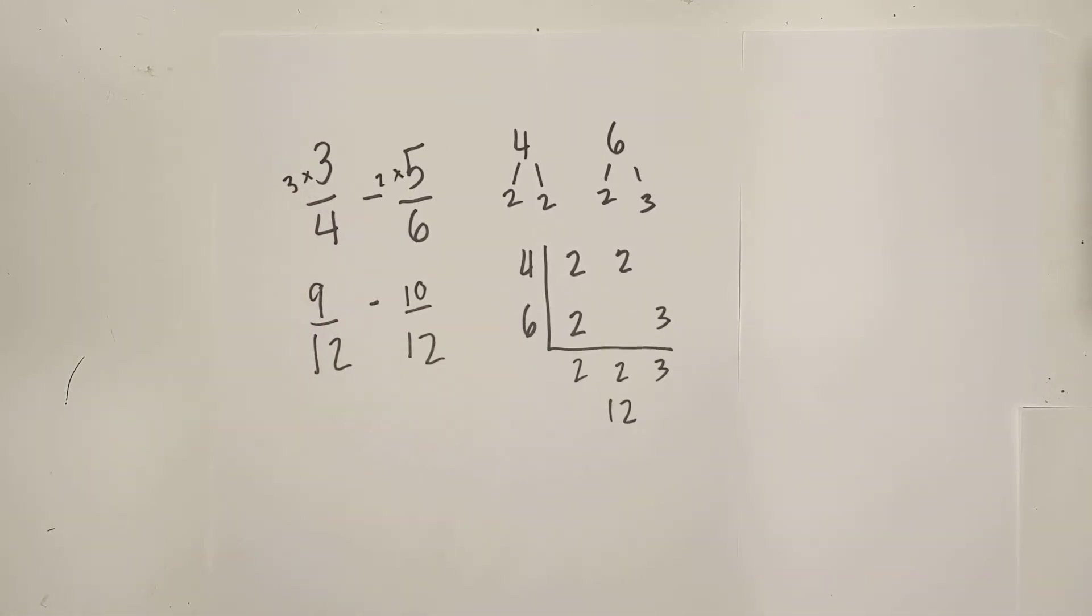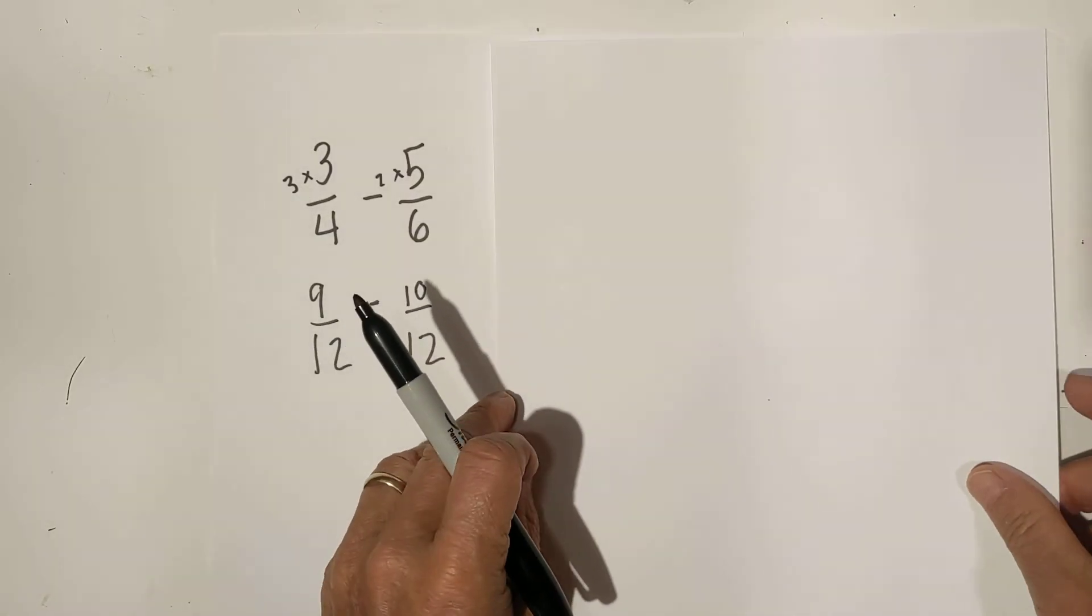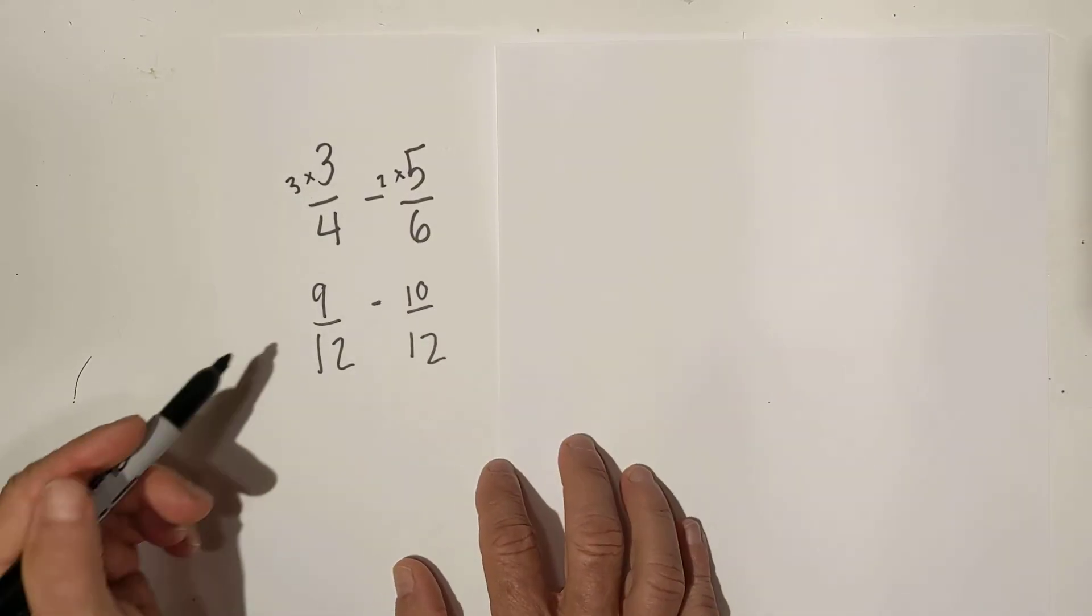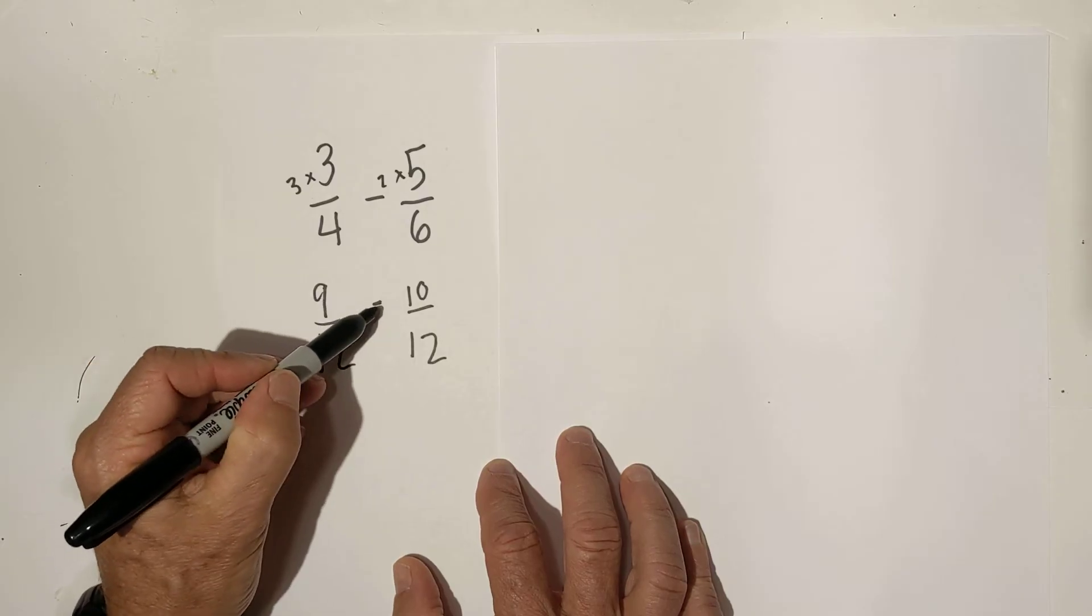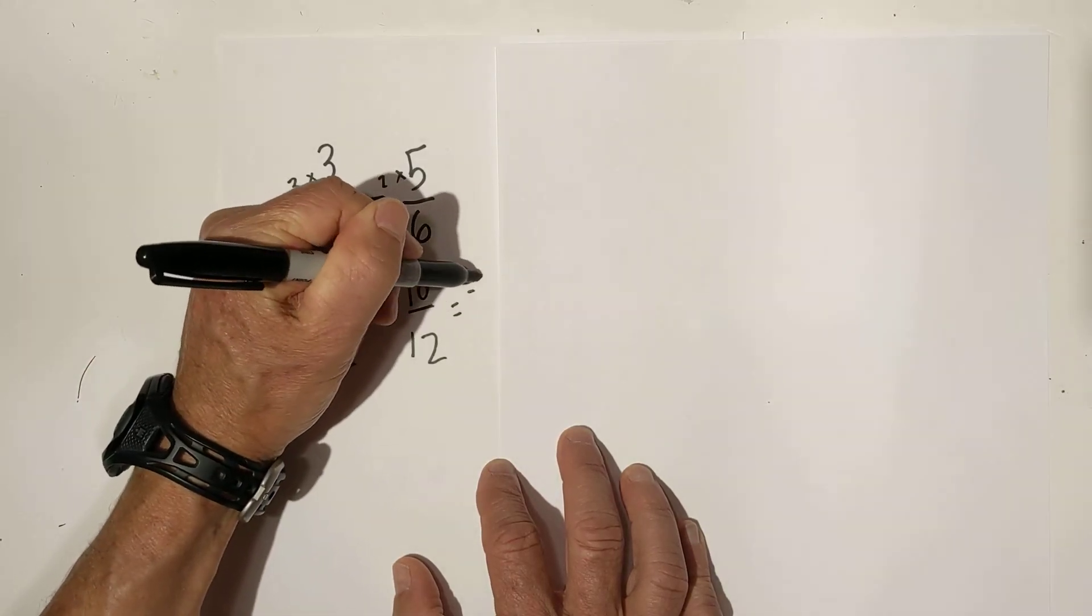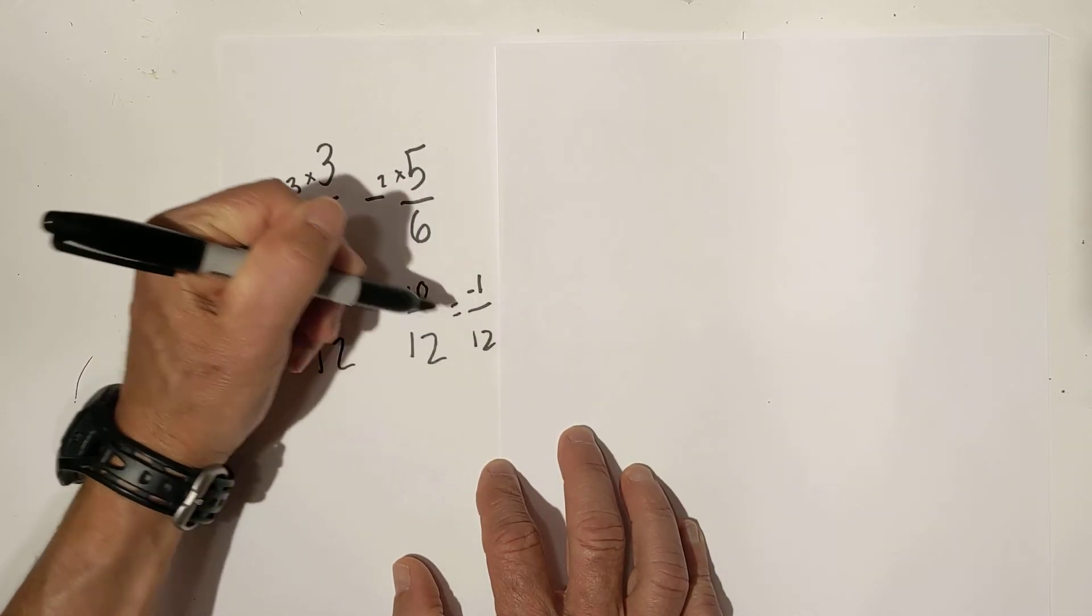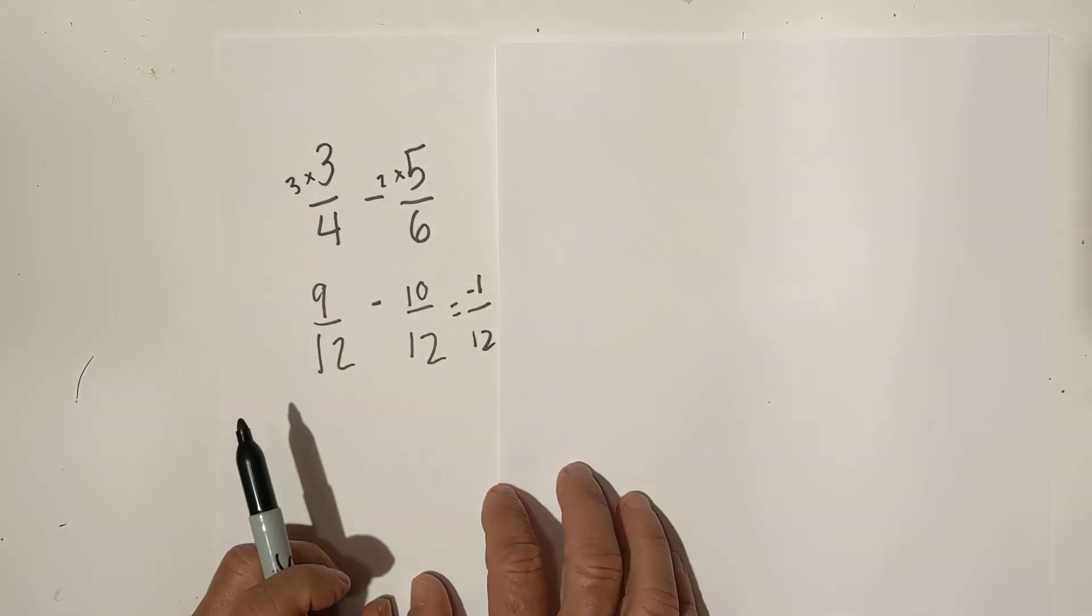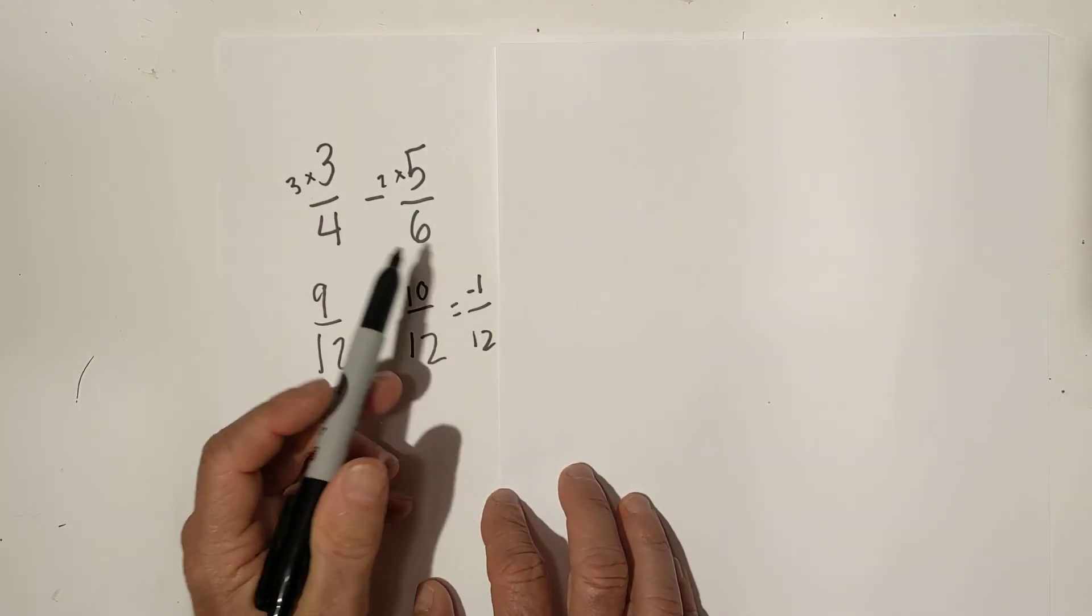Let me put a piece of paper over this because now that we have the common denominator, all that is confusing. Now we just subtract. Nine minus ten is negative one. Bring over the common denominator. It is simplified because you can't reduce one.